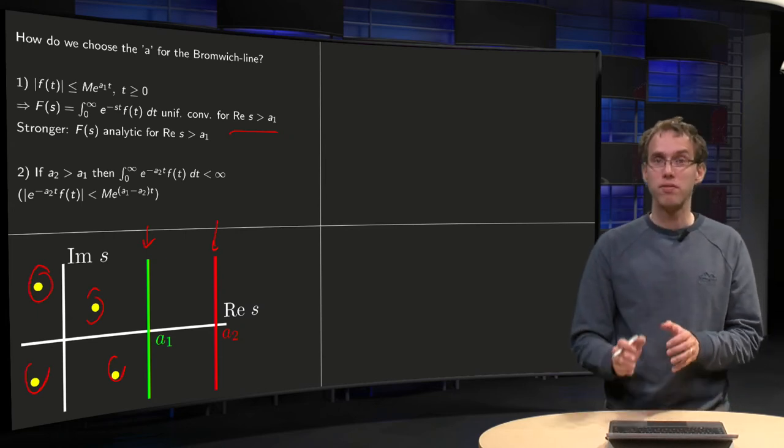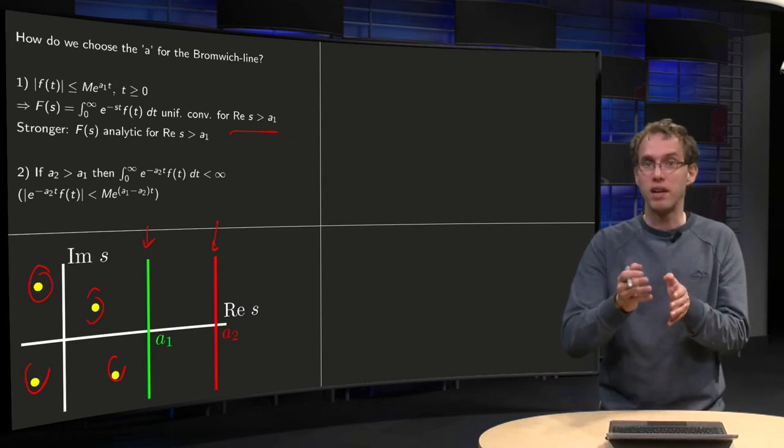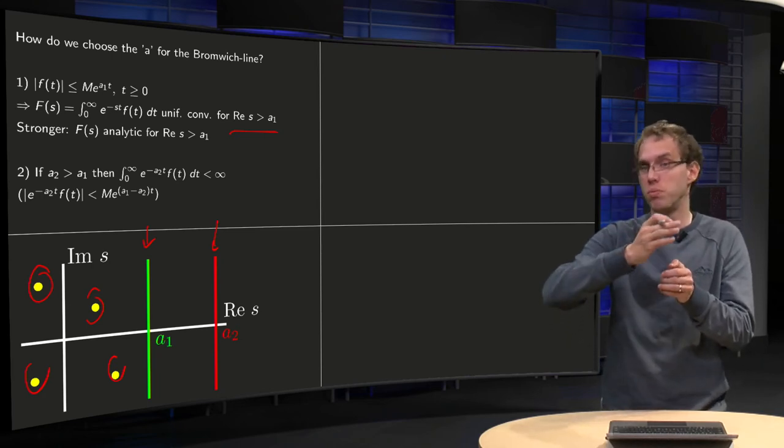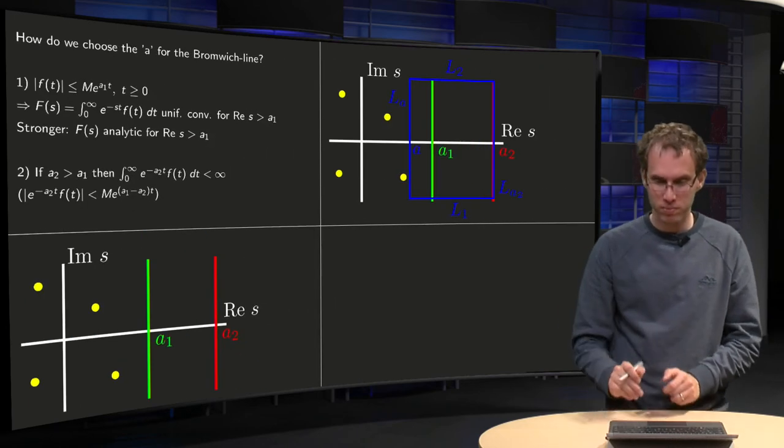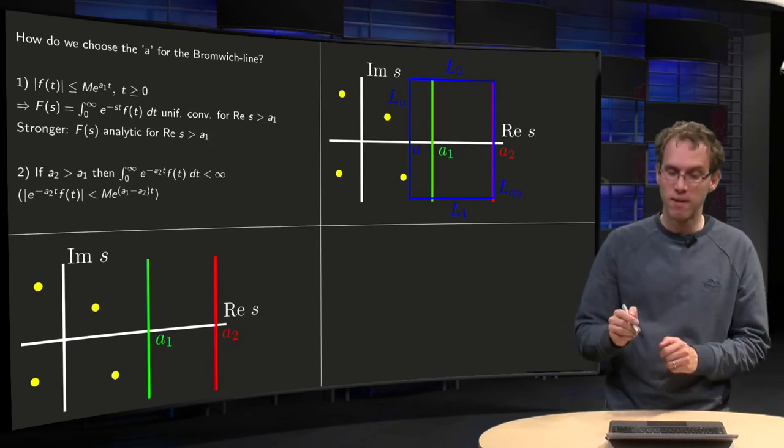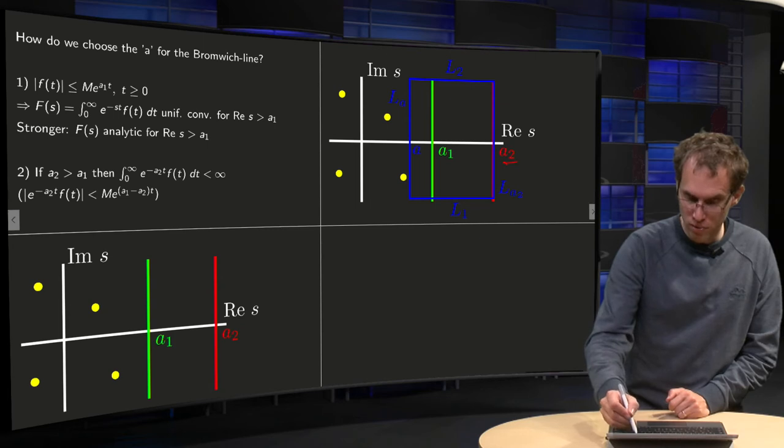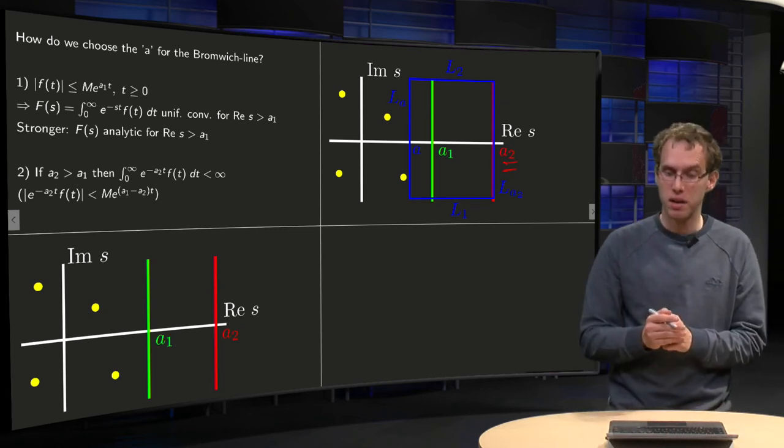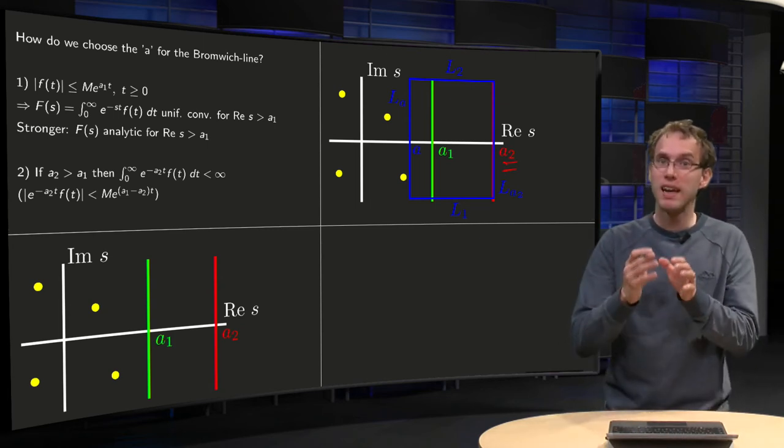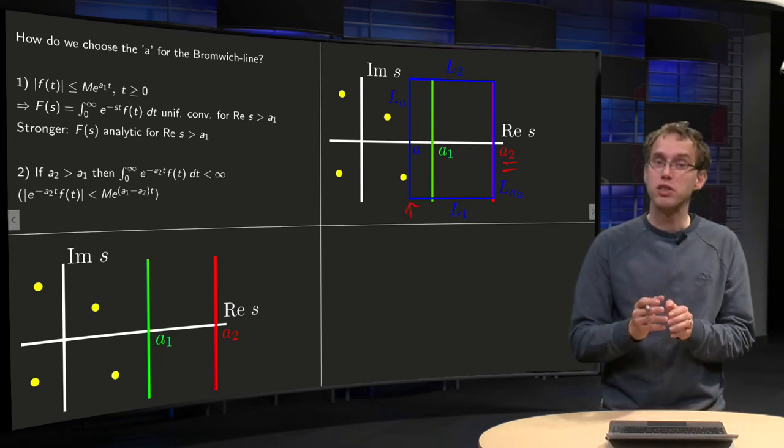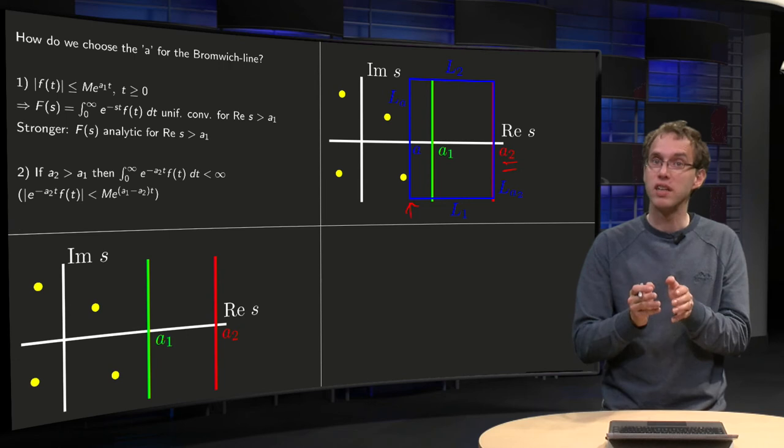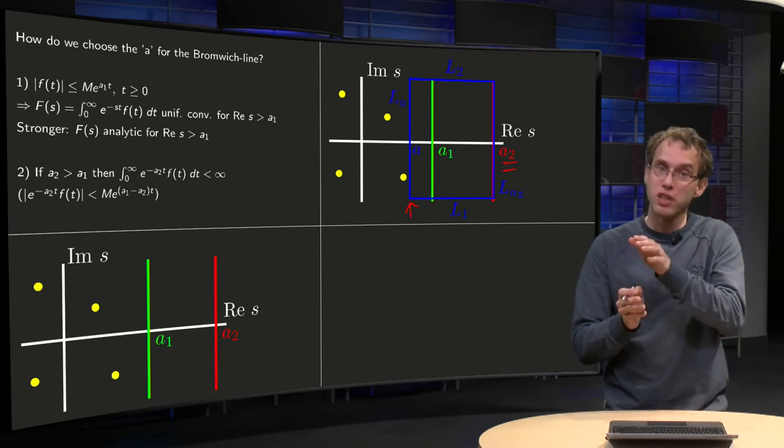But then if we choose our a₂, we have to choose it maybe big, maybe some big constant because you don't know where a₁ is. However, what can you do then? So here we have our a₂ which has to be bigger than our unknown a₁, but now let's pick any a over here such that the line, real part of s equals a, such that all singularities are to the left.